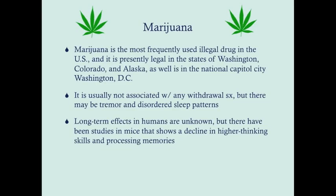Marijuana is the most frequently used illegal drug in the U.S., though it is legal in some states. It is not associated with withdrawal symptoms, though there can be tremor and disordered sleep patterns that are rarely picked up. Long-term teratogenic effects in human infants are unknown, but studies in mice show a decline in higher thinking skills and processing of memories.